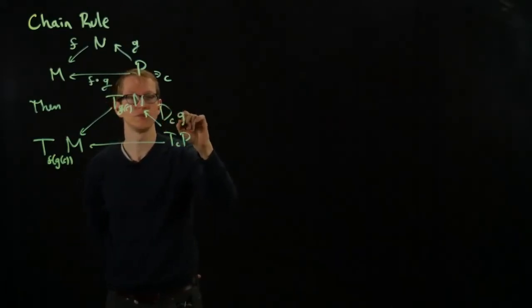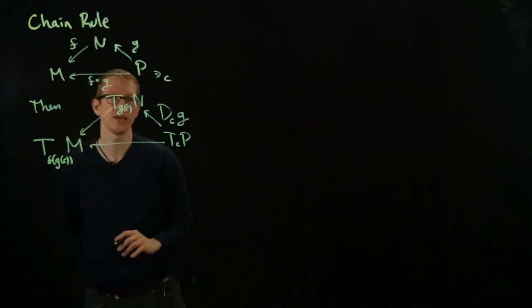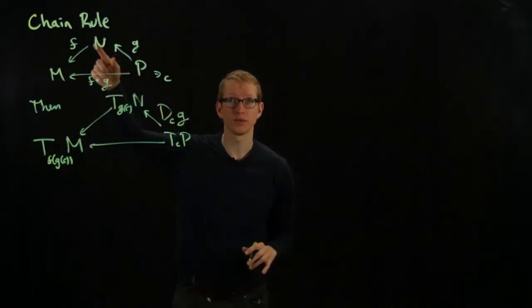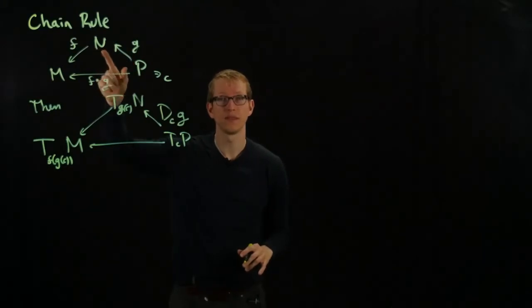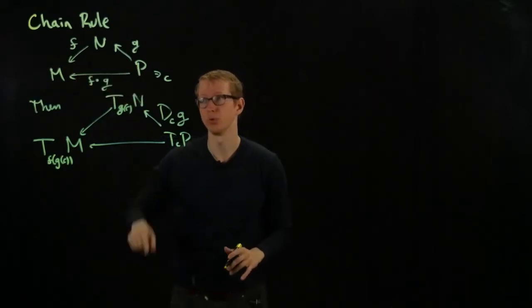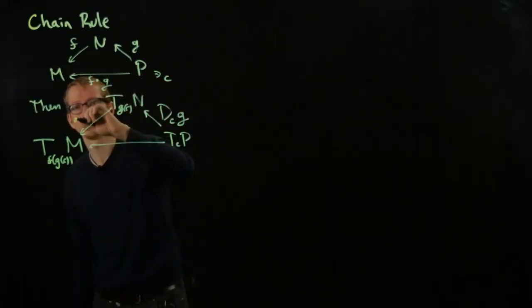So here we take the differential of G. Here, what do we take? We look at the image of G under this transformation, that's G of C. That's the point that we're looking at, so we take the differential of this function at that point. This is D at the point G(C) of the function F.